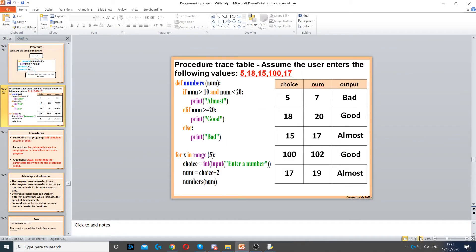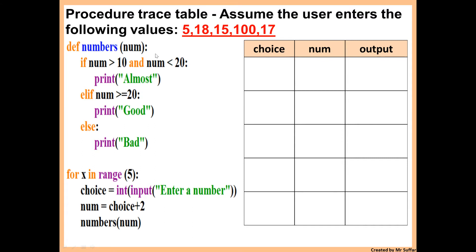Here we have a procedure called 'numbers' with parameter 'num'. The whole procedure will not run until it's called, so the first thing that runs is the for loop. 'choice' is 5 as entered. 'num' equals choice plus 2, so num is 7. Calling 'numbers(num)' runs the procedure, passing the argument 'num' (value 7) into the parameter 'num' at the top.